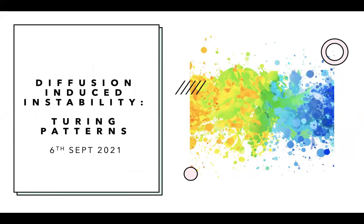In the last class we learned about how instability to heterogeneous perturbations arises from diffusion. This is called diffusion-induced instability, also very famously known as Turing patterns or Turing instability.